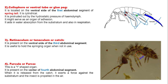The furcula, or springing organ, is a Y-shaped organ present on the ventral side of the fourth abdominal segment of the springtail. When the furcula is released from the catch, it exerts a force against the substratum and helps propel the insect into the air.